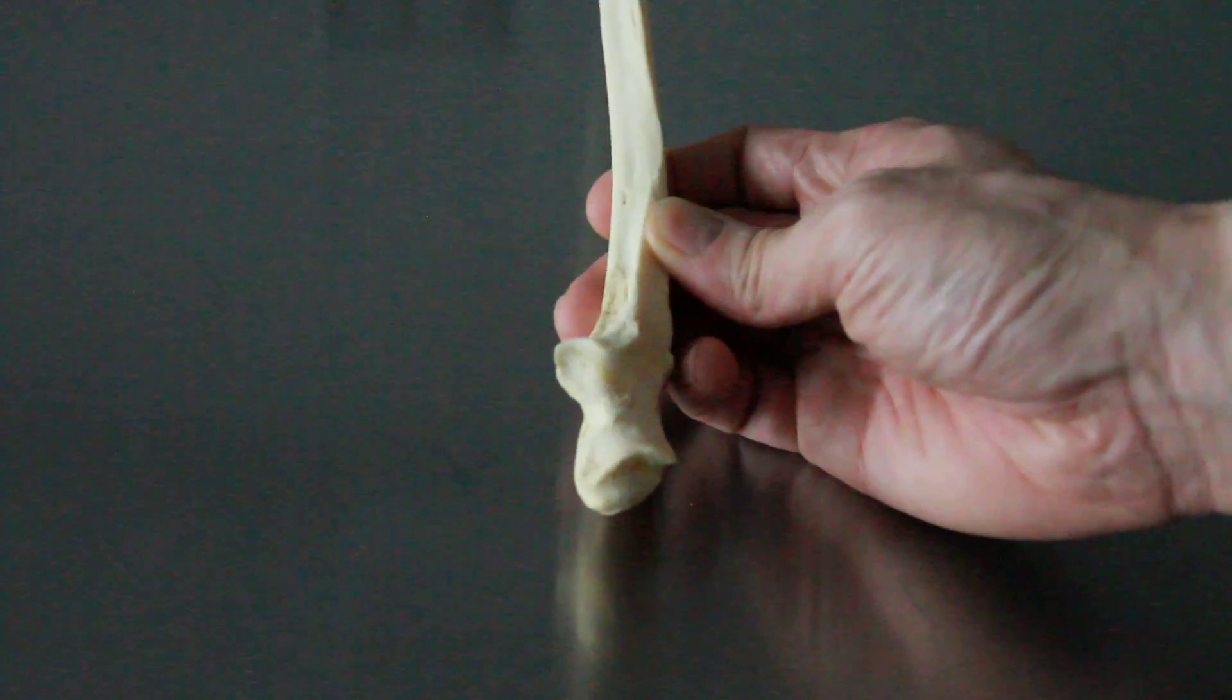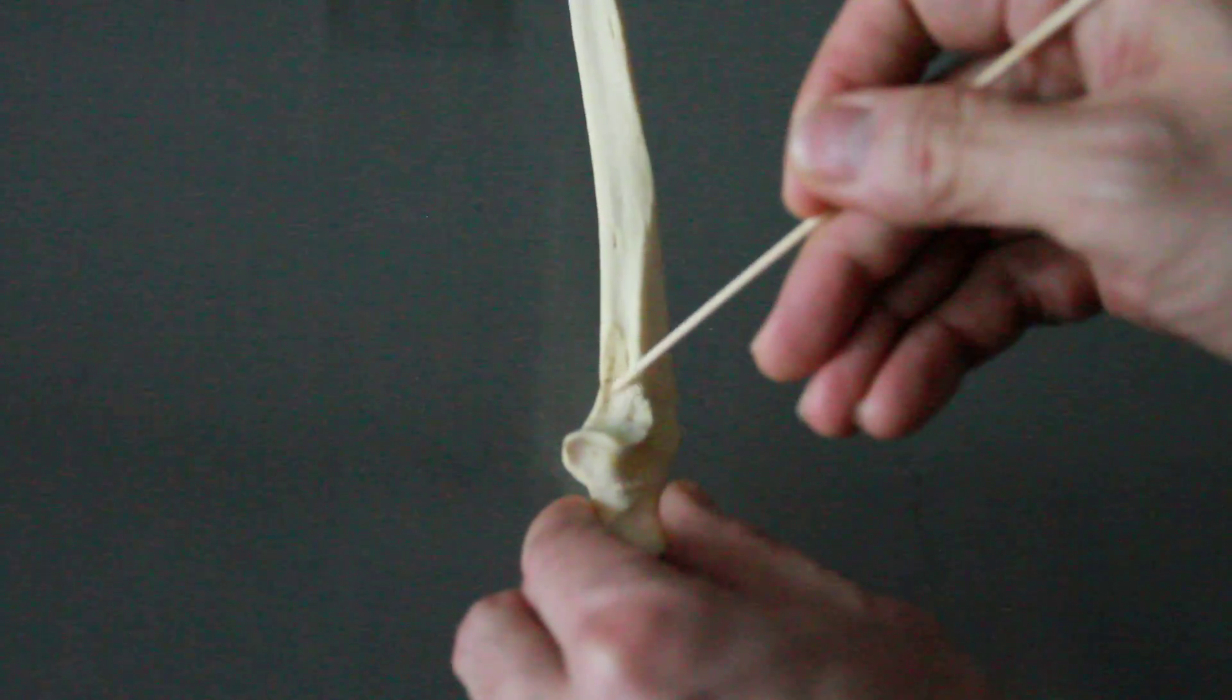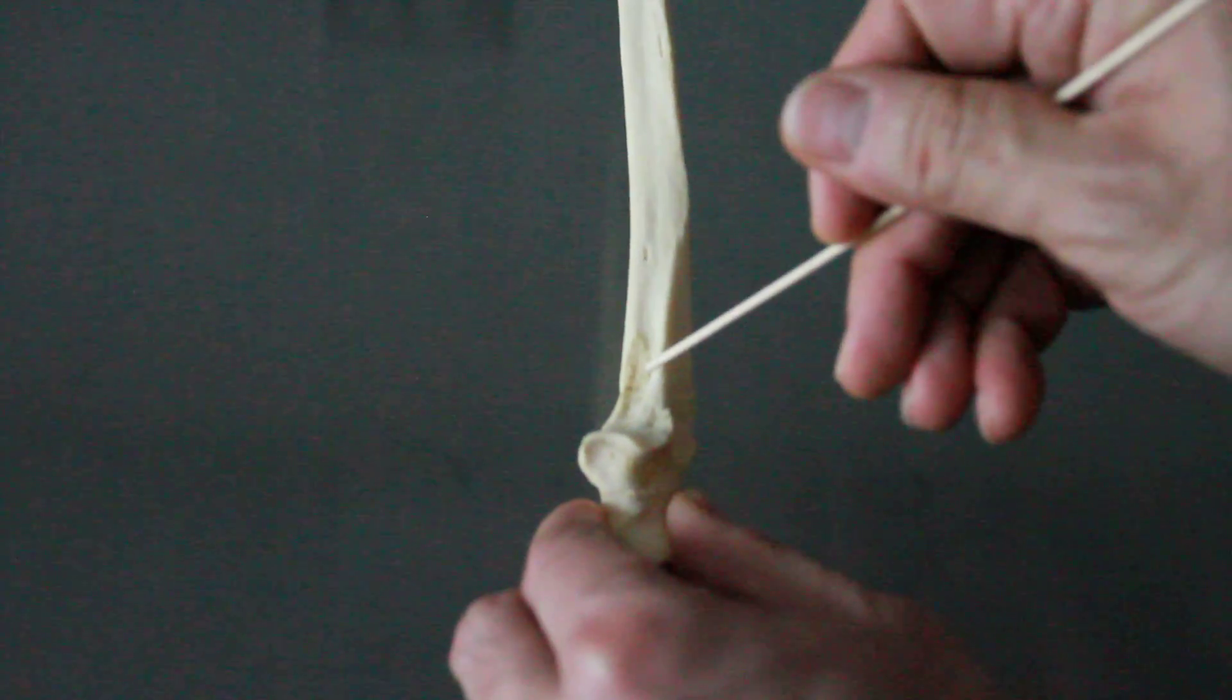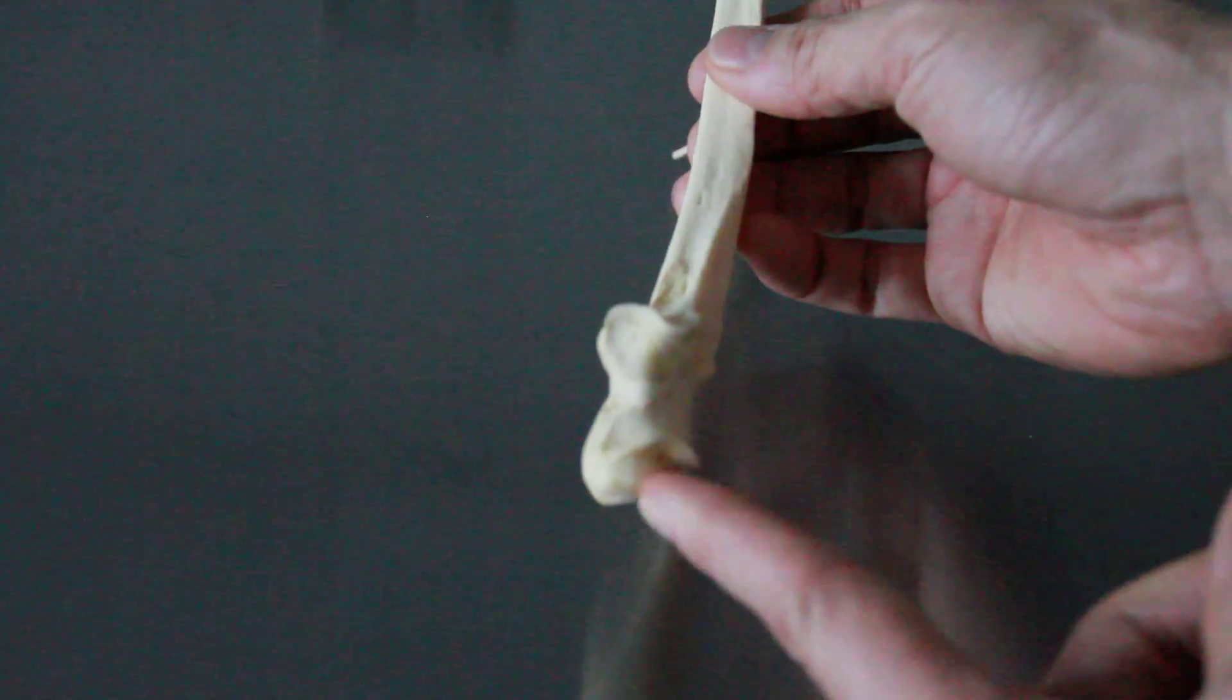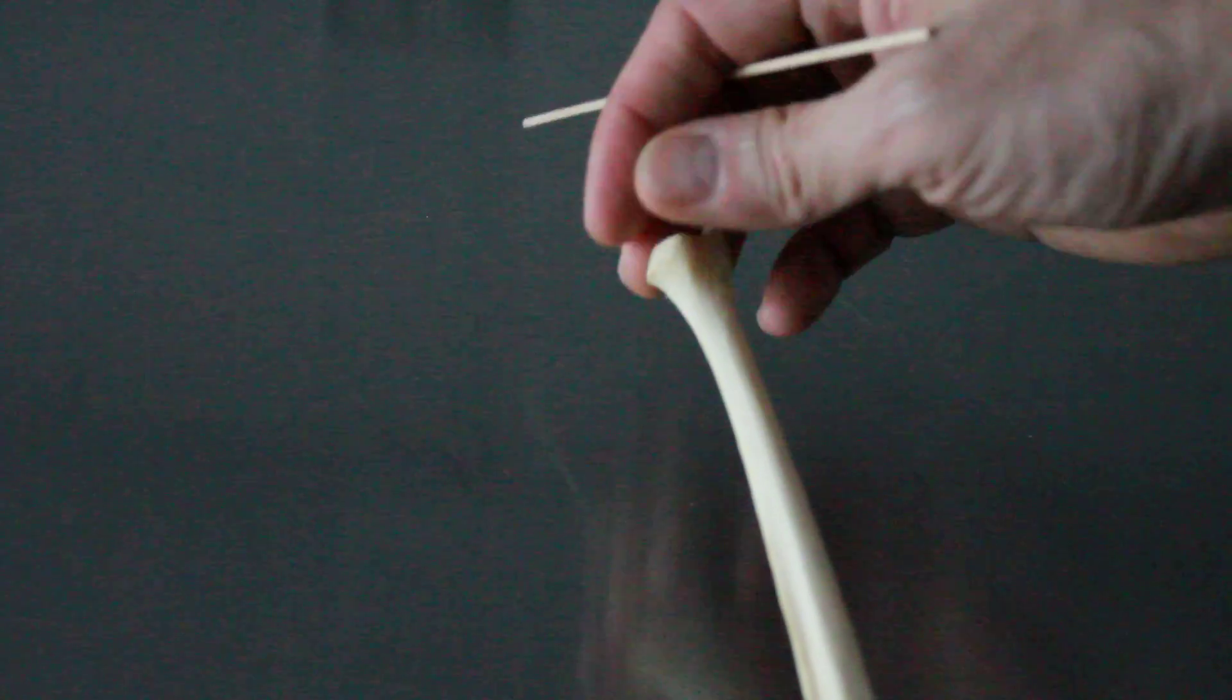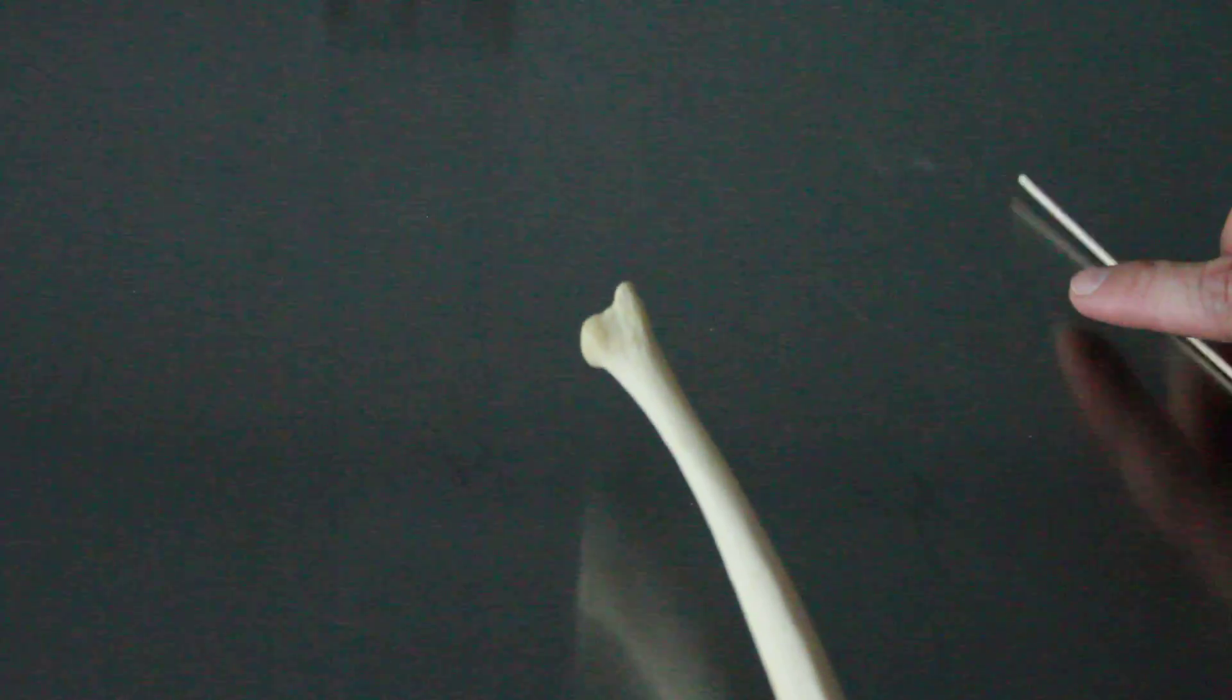A couple other markings to be able to describe. We have this little guy right here, this little rough patch. Remember, rough is tuberosity, and so this is the ulnar tuberosity - it's the only tuberosity on the ulna. And then if I traveled not from the olecranon process but to the distal end, I have the head. So this would be considered the head of the ulna, the neck, and then this little thing called the styloid process.